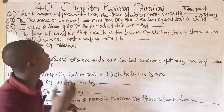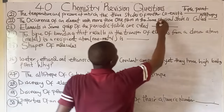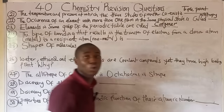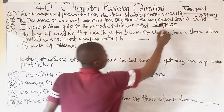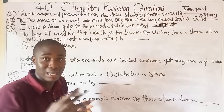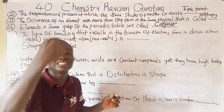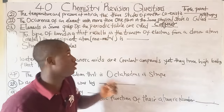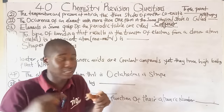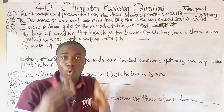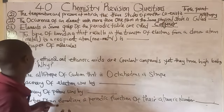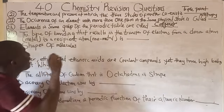Question twenty-three: elements in the same group of the periodic table are called congenous. From the word 'gene' meaning resemblance — elements in the same group share the same chemical properties, so they are termed congenous. Question twenty-four: the type of bonding that results from transfer of an electron from a donor atom (metal) to a recipient atom (non-metal) is called electrovalent bonding.